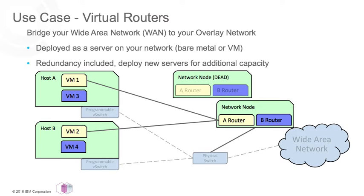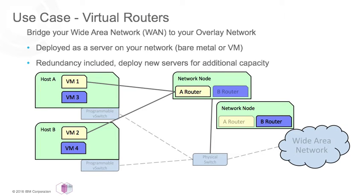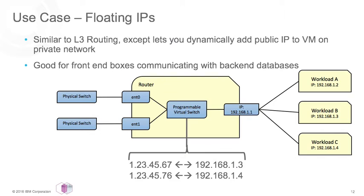A basic router only handles traffic originating from within the VXLAN network going out. For traffic that starts from outside and needs to come into the overlay network, that is where floating IP addresses come in. Floating IP addresses allow you to take an IP address from the wide area network and translate it to a private VXLAN endpoint. In this example, I have a public IP address of 1.23.45.67 that is set in the system to translate to the private VXLAN network and its corresponding IP address.